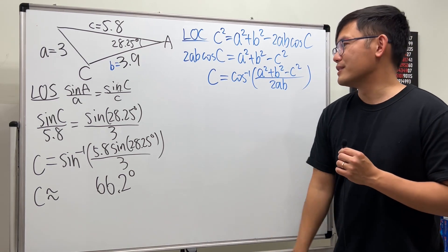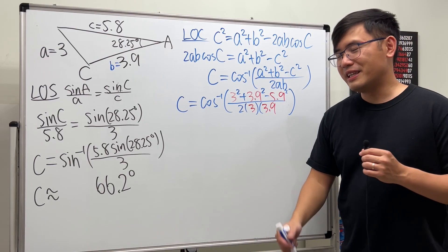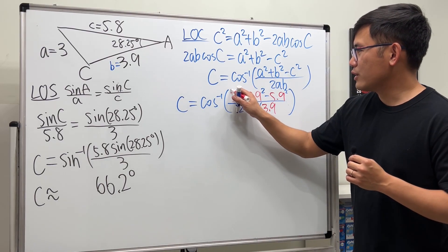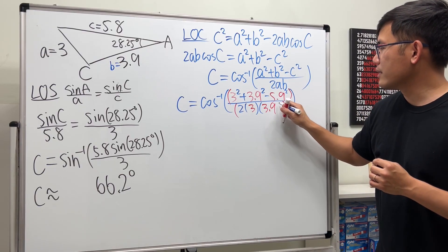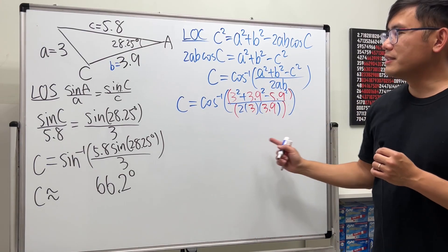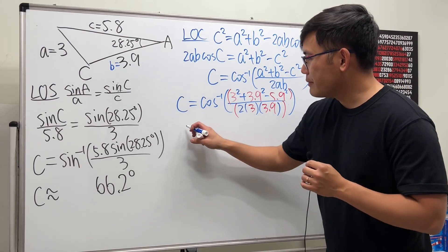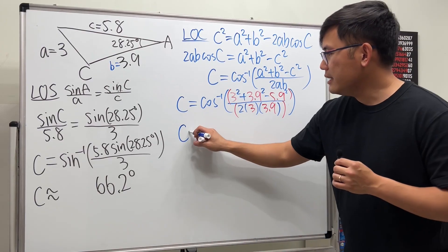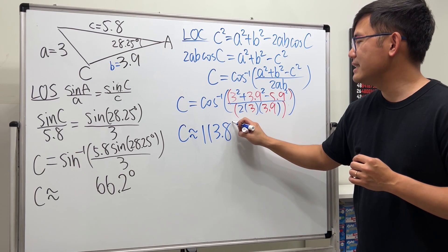And then we plug in the numbers. One really common mistake is that students tend to forget to put a big parenthesis around here on the top, and then a big parenthesis around the bottom. Work this out, and again, make sure your calculator is in the degree mode. This time though, we will see angle c is approximately equal to 113.8 degrees.